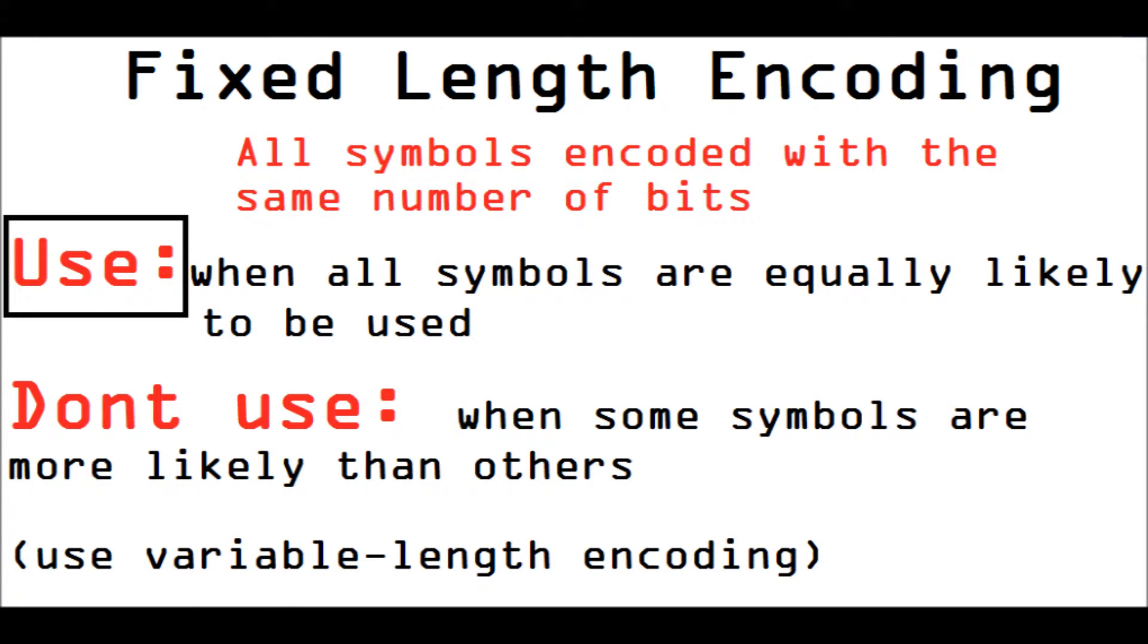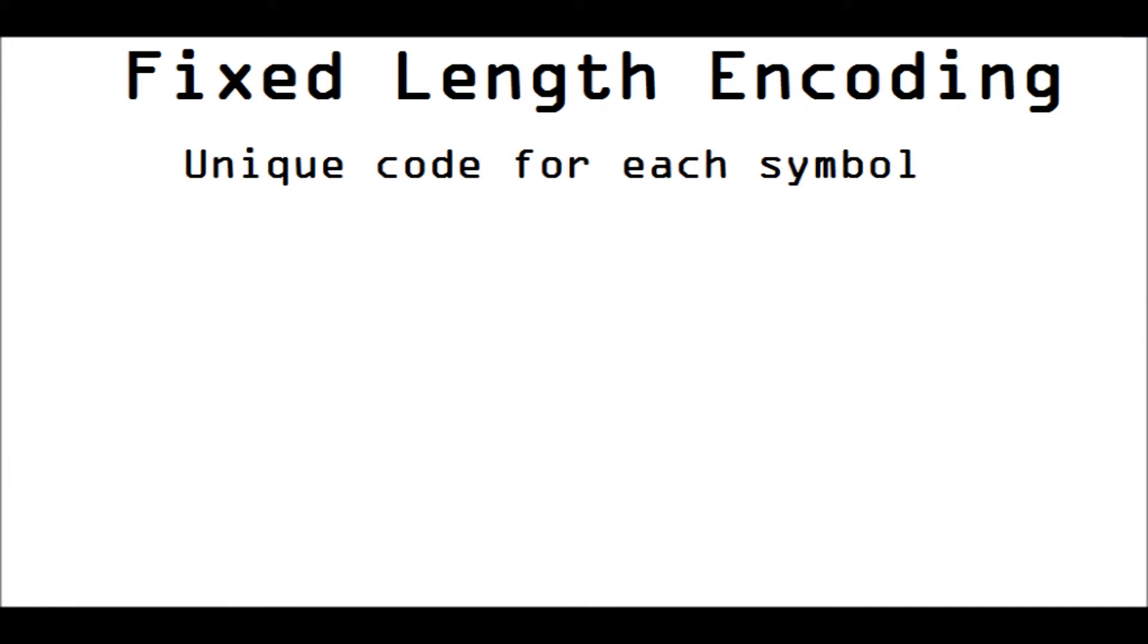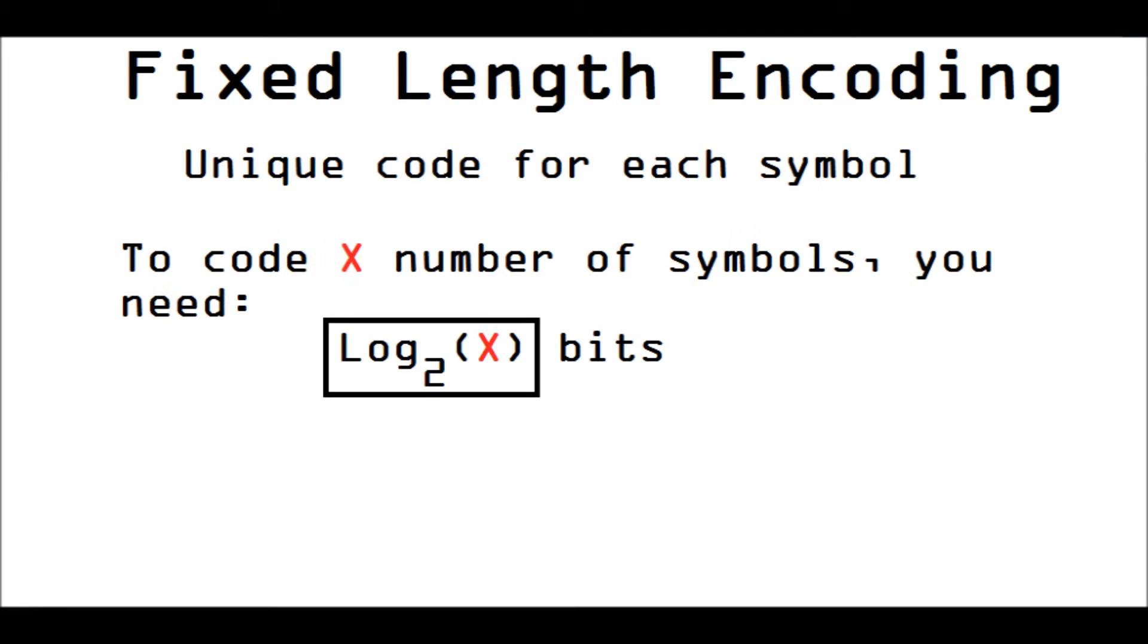So we're going to talk about using fixed length encoding. In fixed length encoding, each symbol you want to represent has a unique binary code. And to code X number of symbols, you need log base 2 of X bits to encode that many symbols.